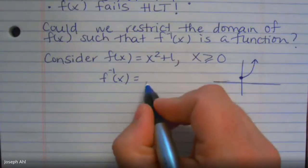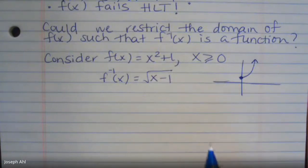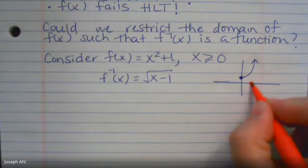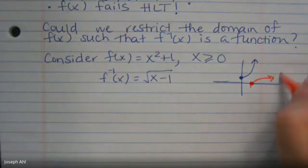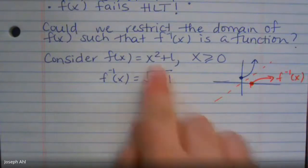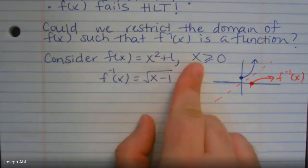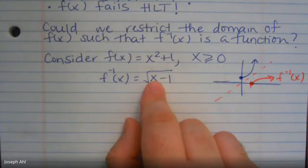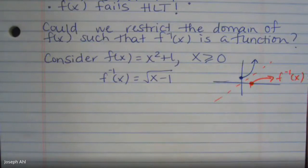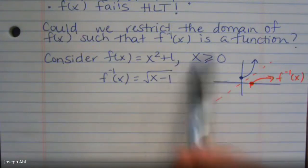What would the inverse be? You still solve and get the radical x - 1, but it only makes sense to consider the positive end of that radical because x ≥ 0. So we get the inverse is √(x - 1) — not plus or minus anymore. That inverse is in fact a function. You can think of y = x as the reflection line. Sometimes you can restrict a function's domain to find an inverse that exists.